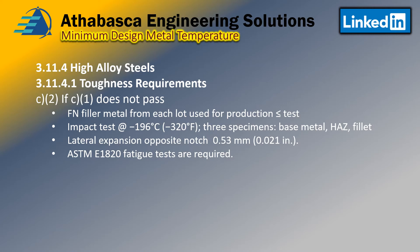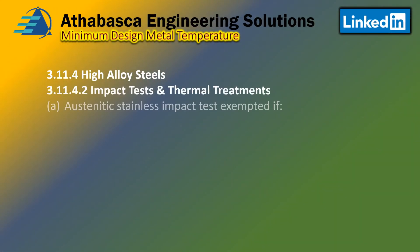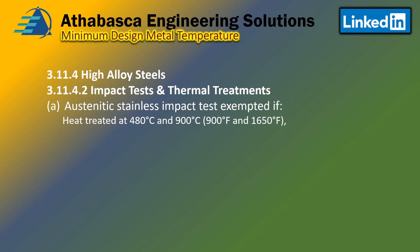The testing standard to use is ASTM E1820. Continuing with C3: if the lateral expansion for one or two specimens does not pass, then fatigue testing is required. Austenitic steels are exempt from impact testing if heat treatment is done at 460 to 900°C, which corresponds to 900 to 1650°F. The exceptions to that requirement are grades 304, 304L, 316, and 316L — they don't require that special heat treatment.